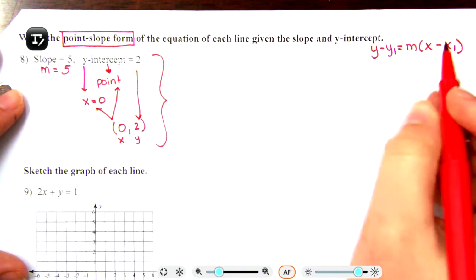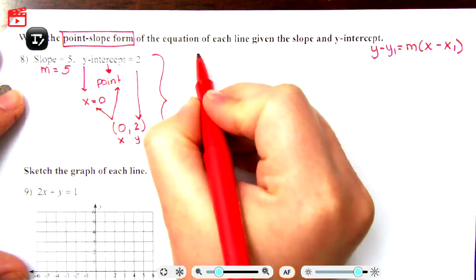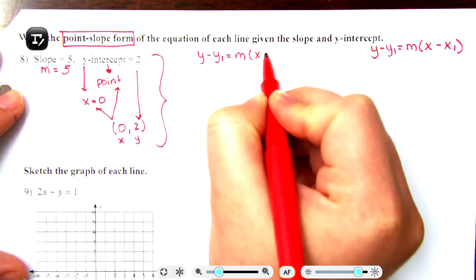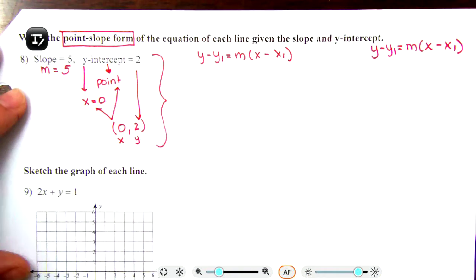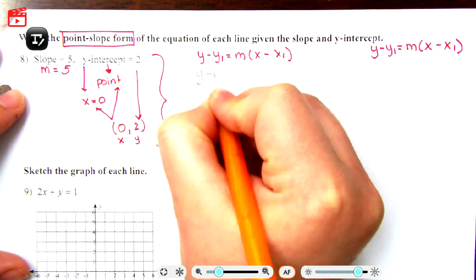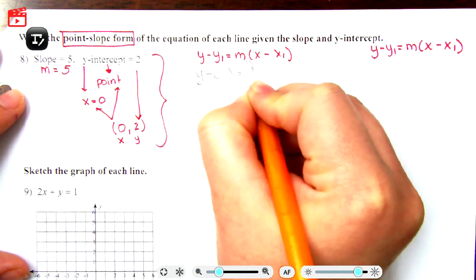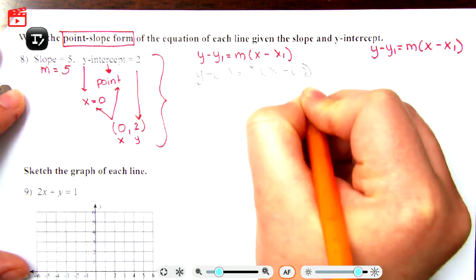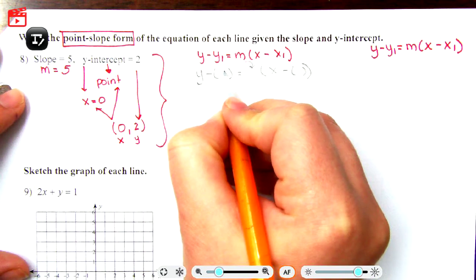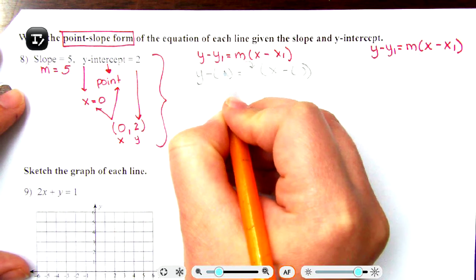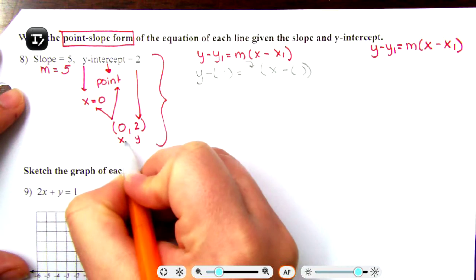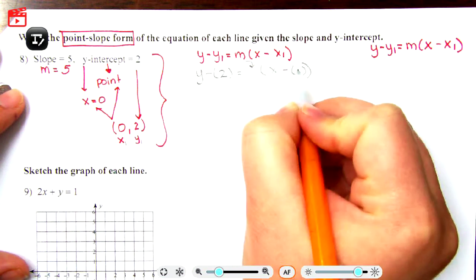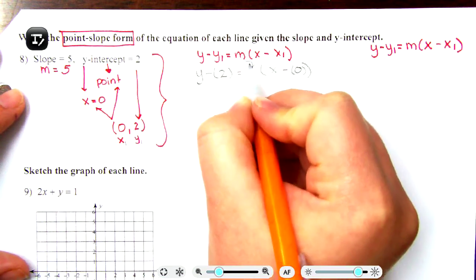So here's x, here's y. In order to write this equation in point-slope form, I'm going to rewrite the formula. This is where we have our keep-keep-change. Keep-keep-change. Slope, keep-keep-change. Y1 - I don't know what y1 is because I didn't label it. So let me do x1, y1. So y1 is two, x1 is zero, and my slope they tell me is five.